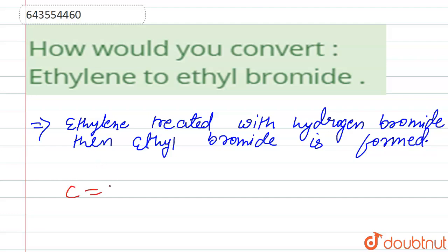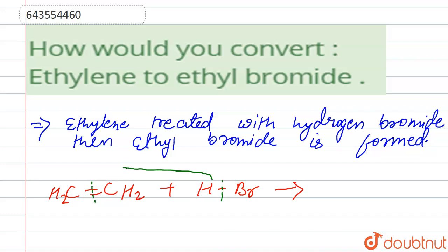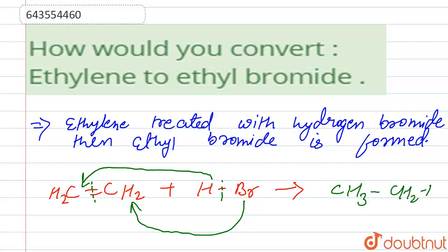The reaction is: C double bond C reacts with HBr. Here the double bond breaks — hydrogen adds to one carbon and bromine adds to the other carbon. The product is CH3CH2Br, that is ethyl bromide.